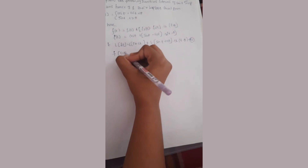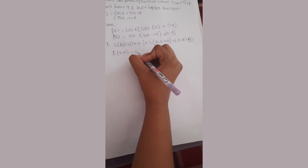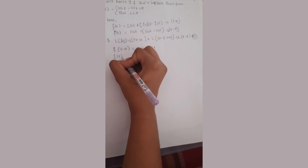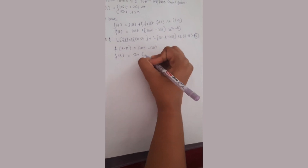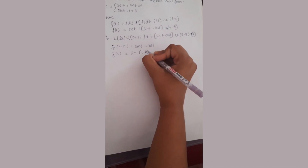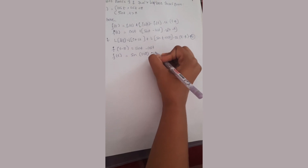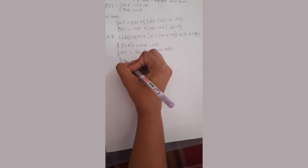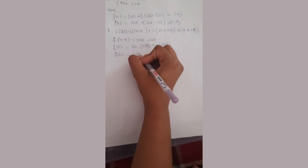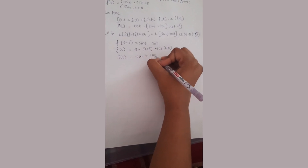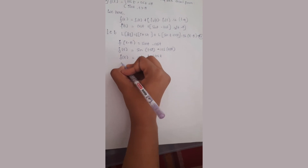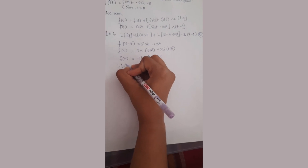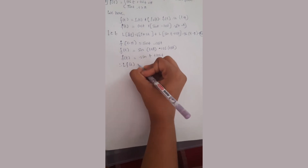f of t minus pi equals sin(t) minus cos(t). Then f of (t minus pi + pi) equals sin(t) plus cos(t). Therefore f of t equals sin(t) plus cos(t).